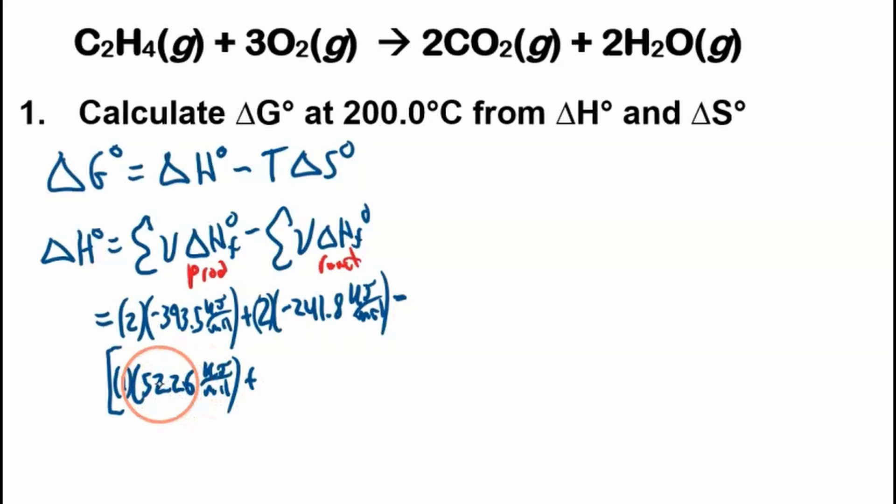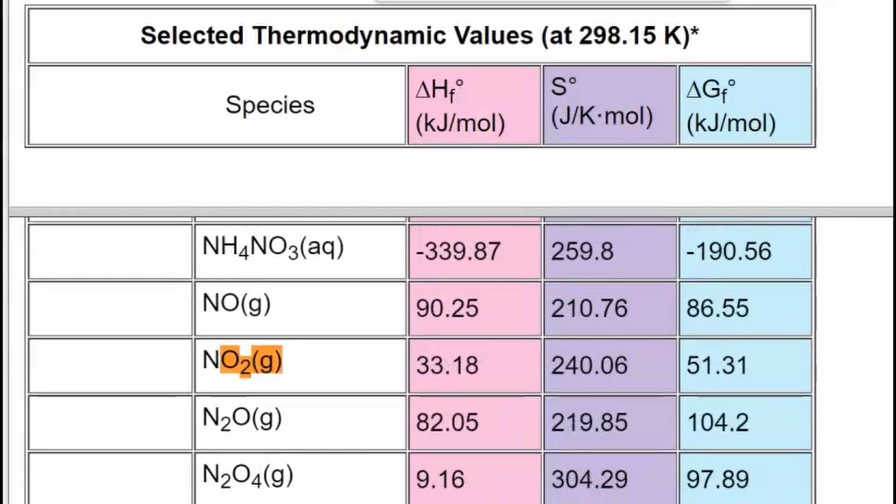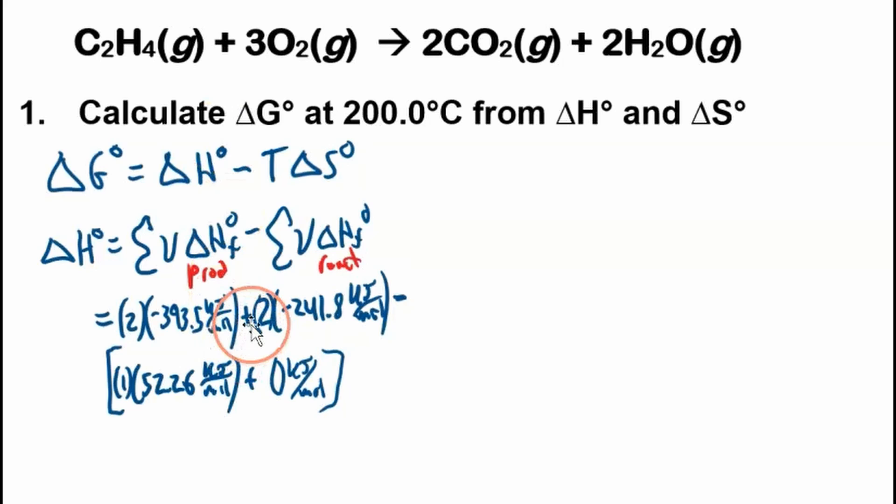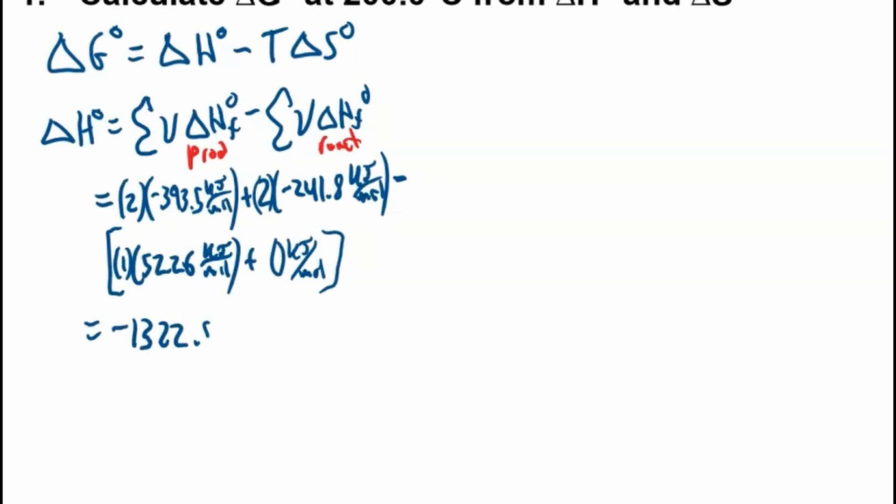So we'll plug that into our calculator. 2 times negative 393.5 plus 2 times negative 241.8 minus 52.26, and I think that's all good. So negative 1322.86, negative 1322.86 kilojoules per mole. Now we'll do the entropy.